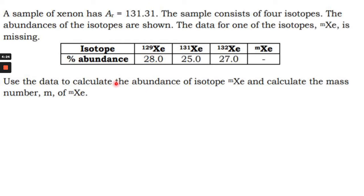So they want you to calculate the abundance of the isotope and calculate the mass number M. M is that number next to it. Normally there'd be a number like these. These are the mass numbers of these isotopes. So they want you to work out this mass number and the missing percentage.